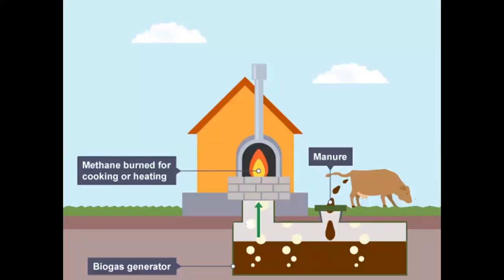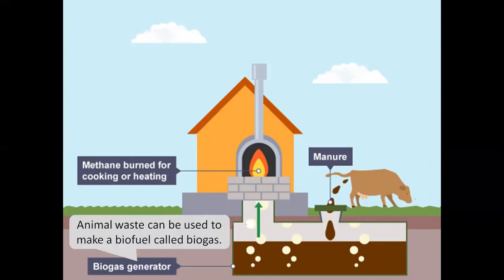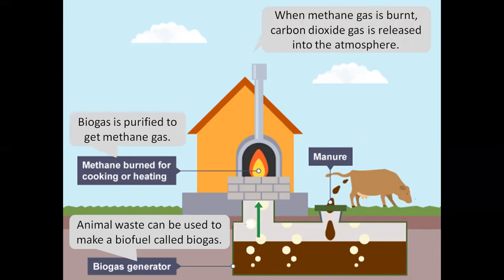Animal waste — manure — can be processed in a biogas generator. Animal waste can be used to make a biofuel called biogas. Biogas is purified to get methane gas, which is burned for cooking and heating. When methane gas is burned, carbon dioxide gas is released into the atmosphere.